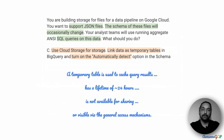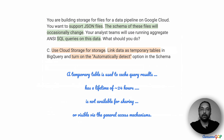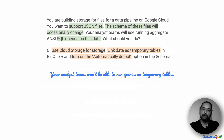However, the option about linking the data as temporary tables has some issues. A temporary table in BigQuery is typically used to cache query results. It has a lifetime of about 24 hours and you can't share it with other users using IAM policies, nor is it accessible via general access mechanisms like the console or BQ. Therefore, your analyst teams won't be able to run SQL queries on this data because they are temporary tables that they don't have access to. Therefore, we have to eliminate option C.